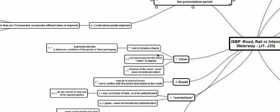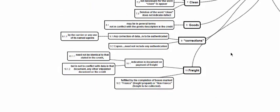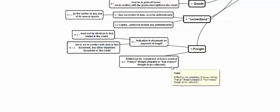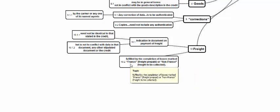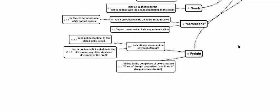The word 'clean' need not appear on the transport document; clean means the defective condition of goods or packaging is not mentioned. Deletion of the word 'clean' does not make the document defective. Goods can be described in any form — need not be a mirror image, but should not conflict. Corrections must be authenticated by the carrier or their agent — that is, by the issuer — but copies need not be authenticated. Regarding freight, an indication of freight payment in the document may not be identical to the credit (e.g., 'freight collect' vs. 'freight payable at destination'), but should not conflict. The fields 'Franco' (freight prepaid) and 'non-Franco' (freight not prepaid) are adequate indications of freight requirements as per the credit.